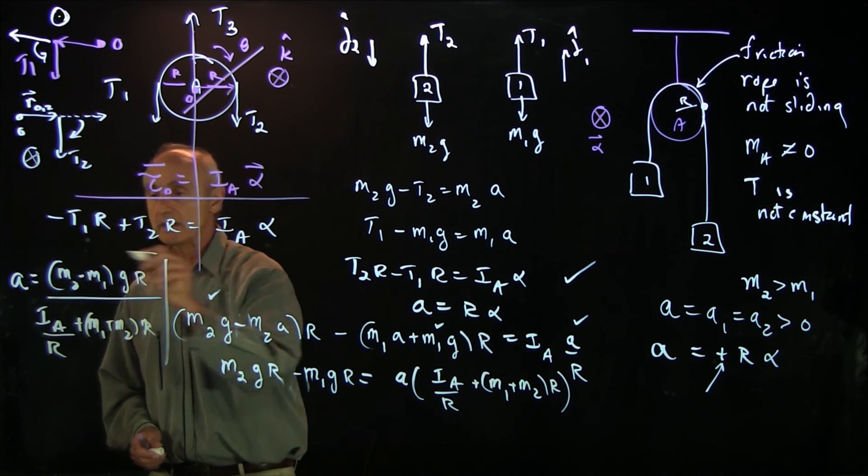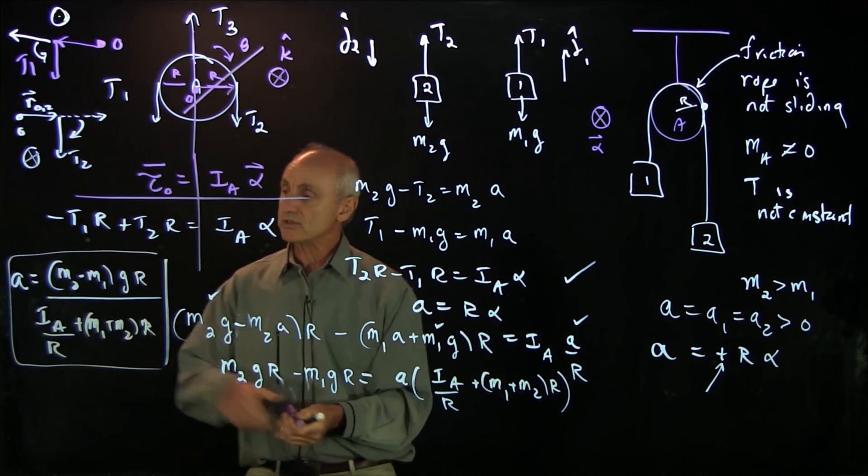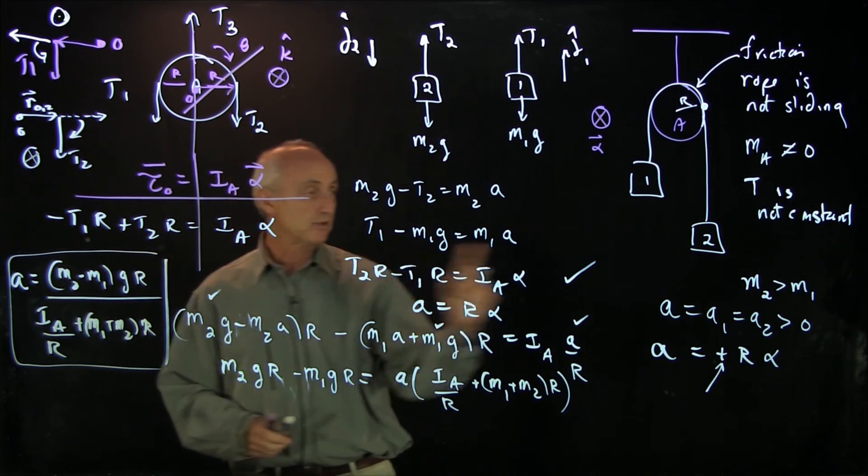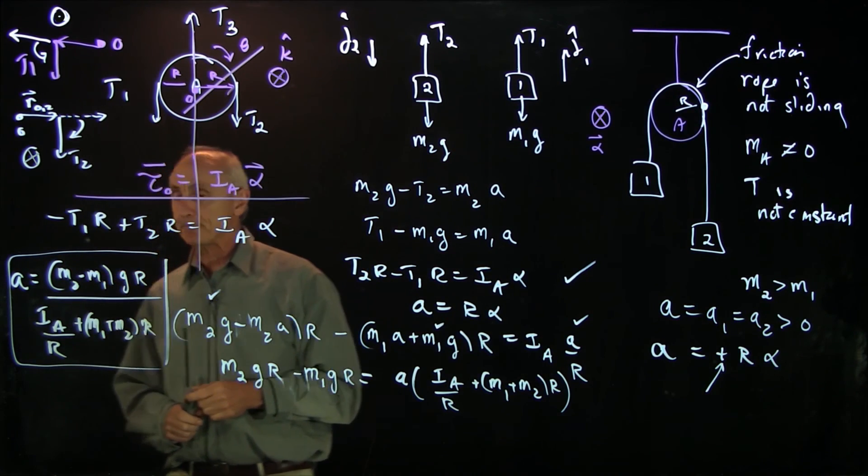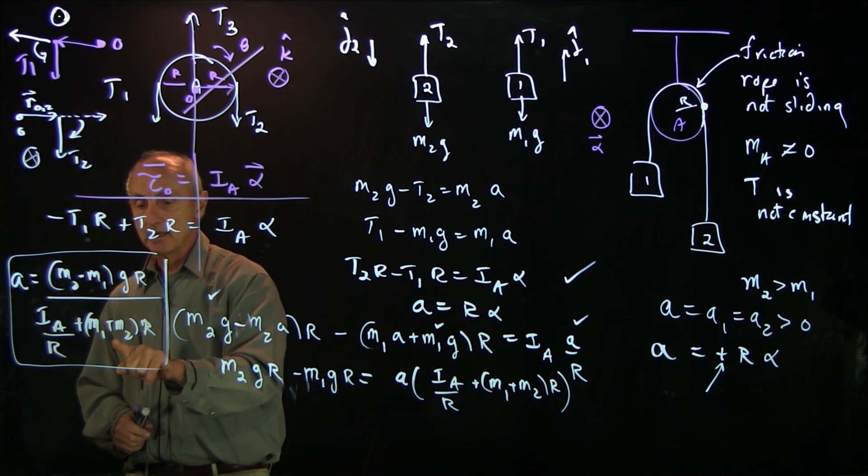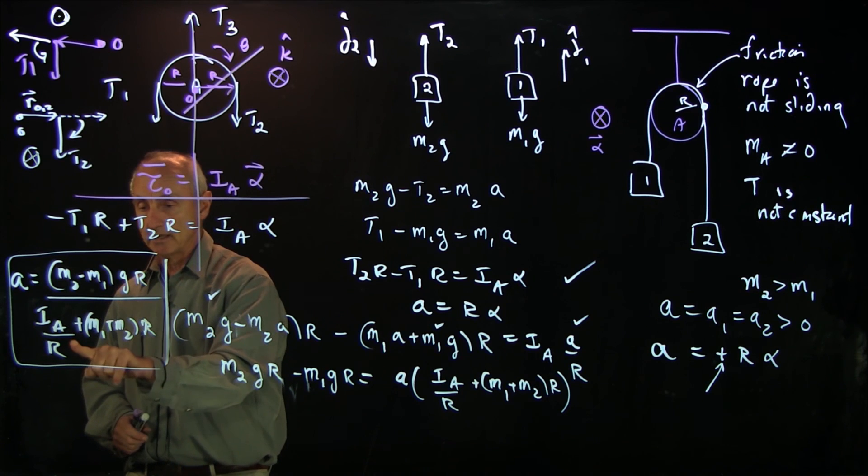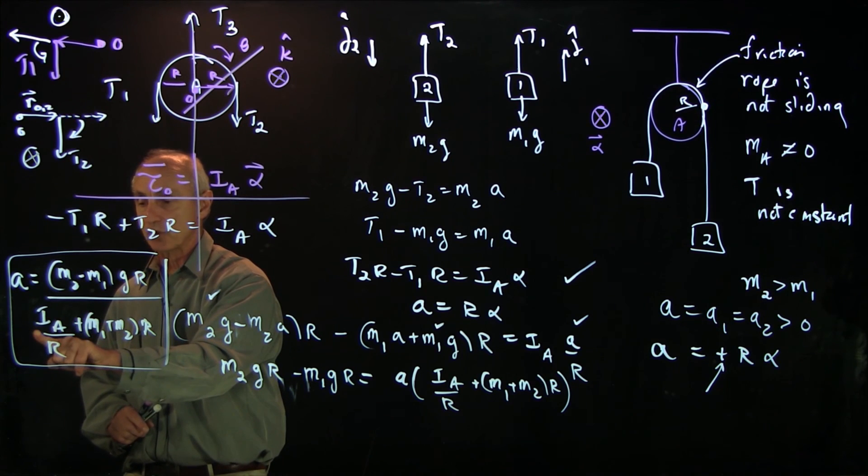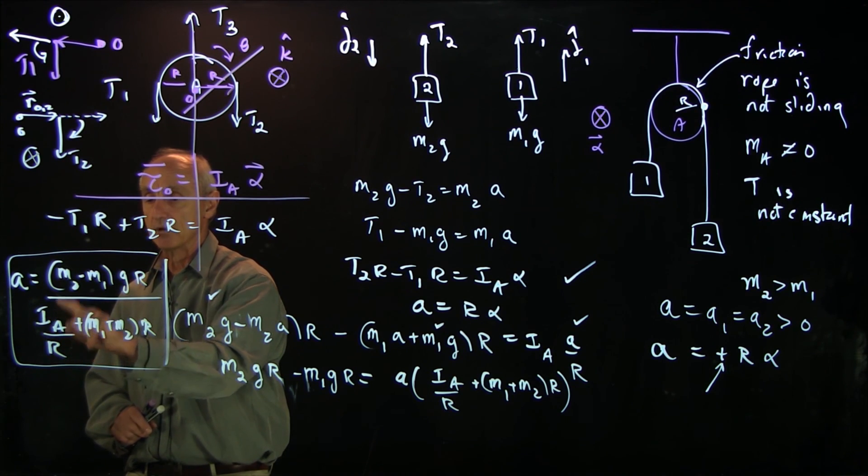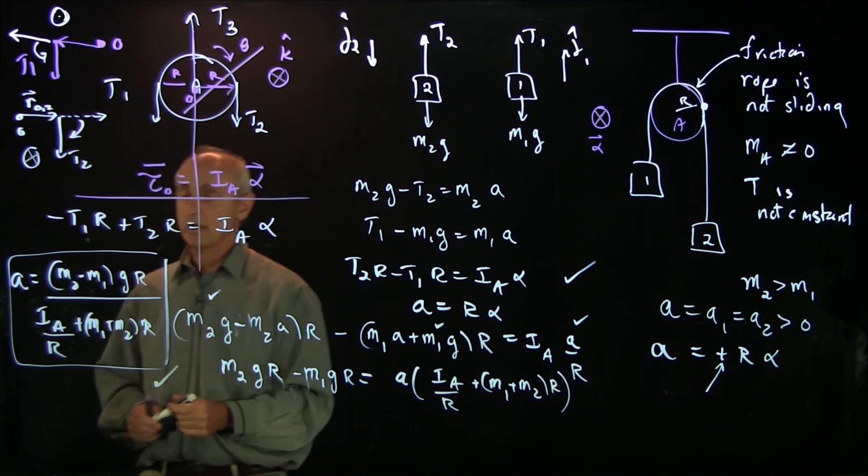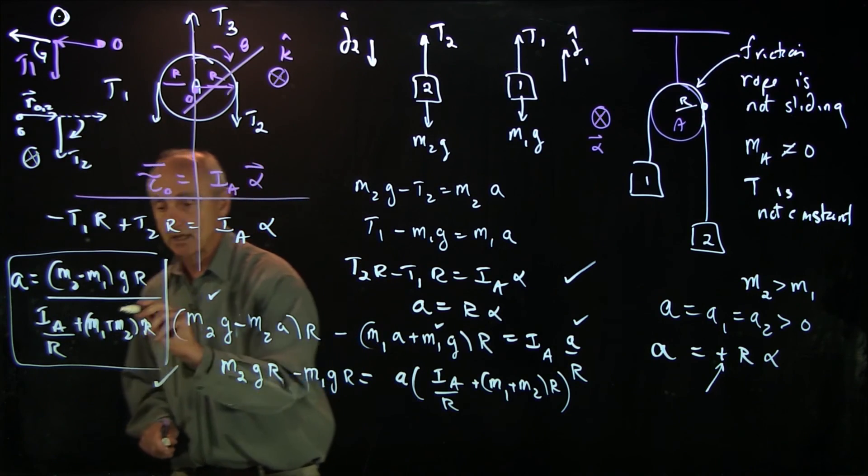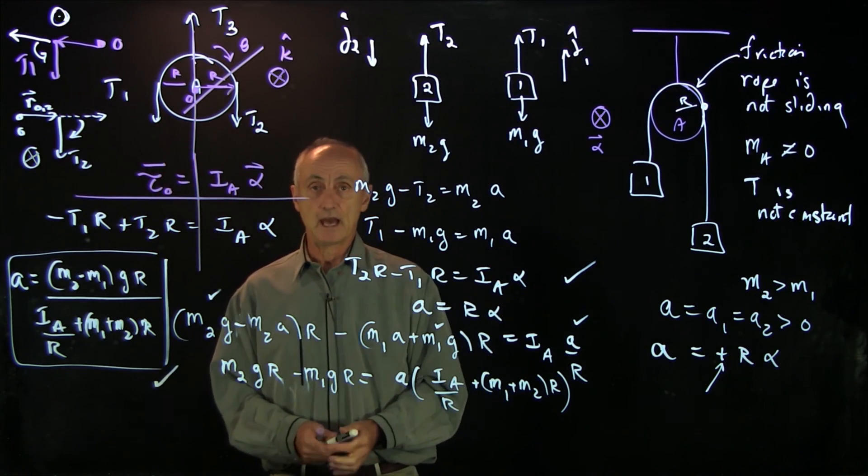When I have this result, let's just check a number of things first. Notice that if M2 is bigger than M1, a will be positive, which is what I expected. Dimensionally, we have M2gr. Down here, M2r. So this first term will have dimensions of acceleration g. Over here, we have I times a over r. But remember, moment of inertia is m times r squared. So this also has the dimensions of mass and radius. And so I have confidence dimensionally, and the sign of a, that this is the correct answer. And that's how we solve the Atwood machine.